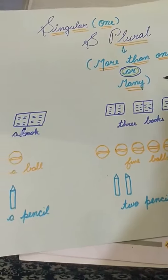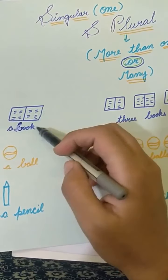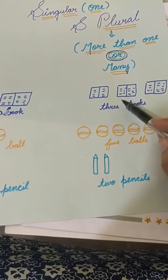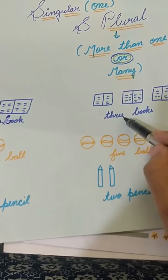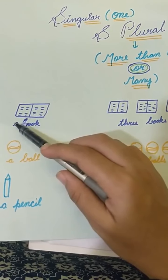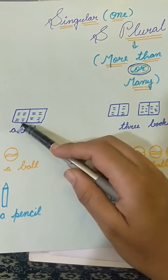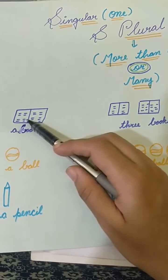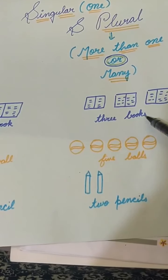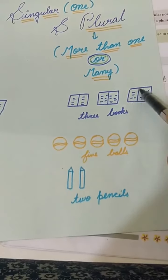Can you see what this is? A book — ek ki baat kar rahe hain. Now you can see: one book, two books, three books — T-H-R-E-E, B-O-O-K-S. Yahan par ek ki baat karte hain to likhte hain 'a book.' Jab teen ki baat karte hain, book ke saath S add kar diya — yeh plural form ho gayi.